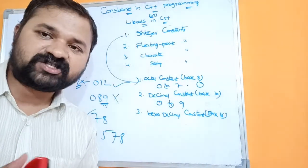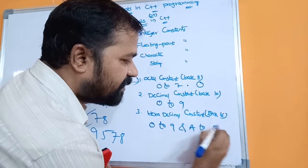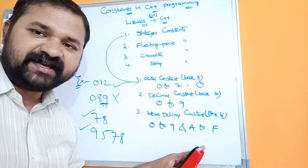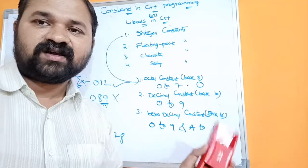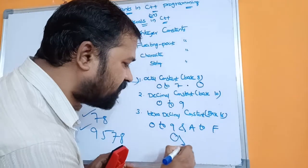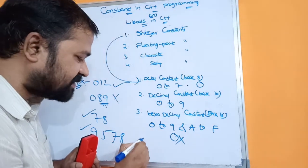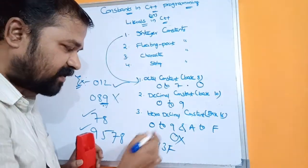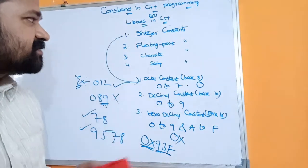The next one is hexadecimal constant. A hexadecimal constant allows digits from 0 to 9 and a to f, where a means 10, b means 11, c means 12, d means 13, e means 14, and f means 15 — so it allows values from 0 to 15. Additionally, a hexadecimal constant always begins with 0x, where x may be either lowercase or uppercase. For example, 0x93f is a valid hexadecimal constant.